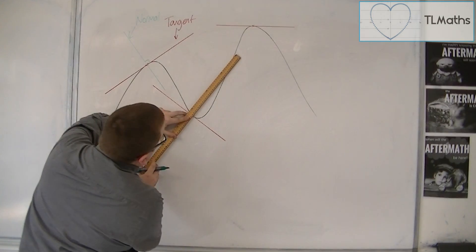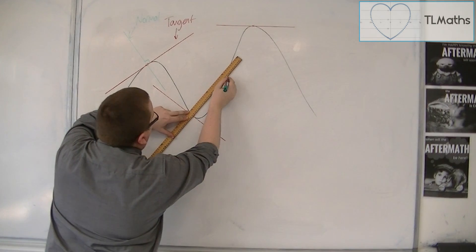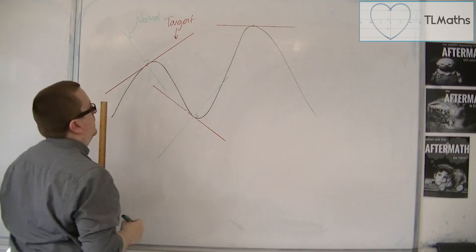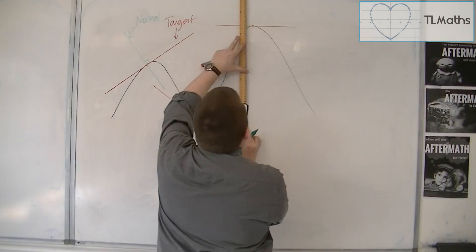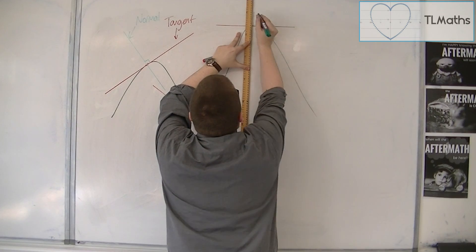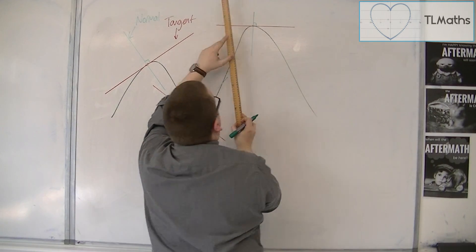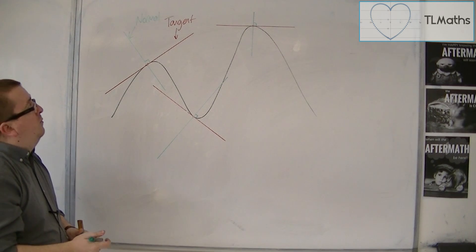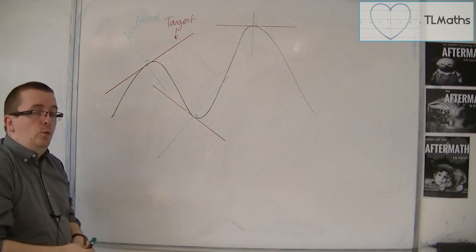And likewise, we could have a normal to this point as well, and also this one. So the green lines here are all normal lines, and the red ones are all tangent lines.